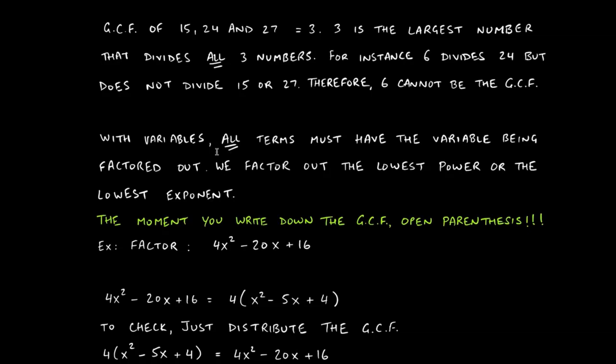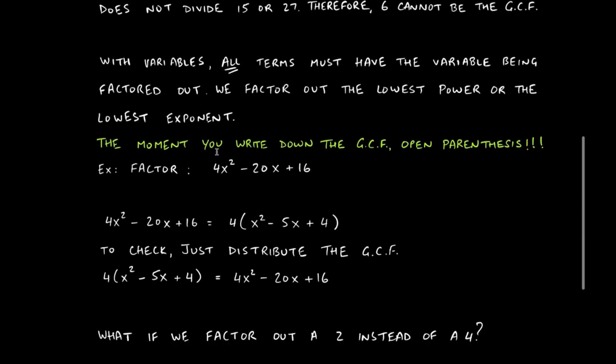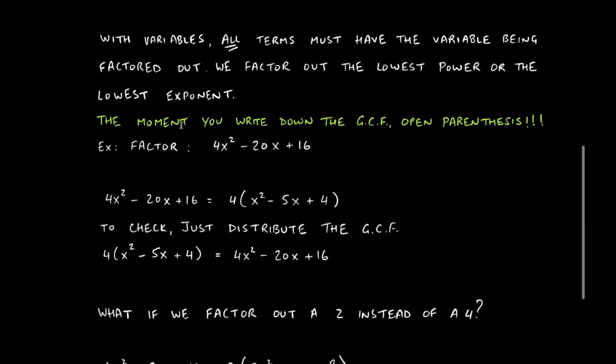With variables, all terms must have the variable you're trying to factor out, so we factor out the lowest power — the lowest exponent — of that variable. Also, the moment you write down the GCF you have to open parentheses, which I'll explain when we get to it.